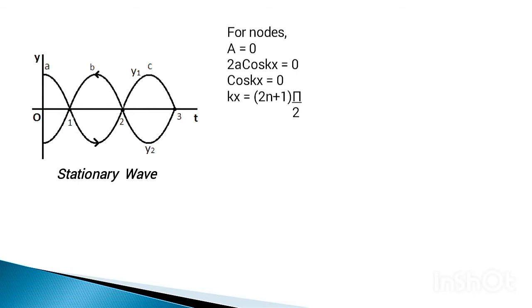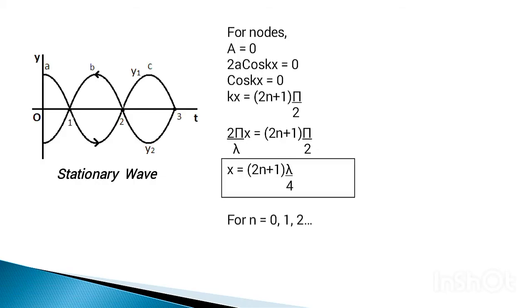For nodes, the amplitude A* equals zero, which means 2A cos(kx) equals zero. This gives kx equals (2n+1)π/2, where n equals 0, 1, 2, and so on. Since the wave number k equals 2π/λ, substituting gives x equals (2n+1)λ/4 for n equals 0, 1, 2, 3, and so on. This gives the position of nodes in a standing wave.